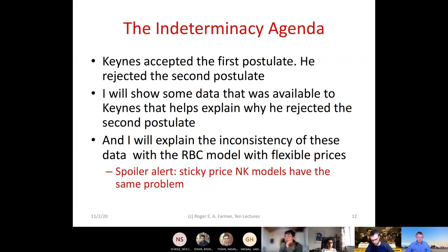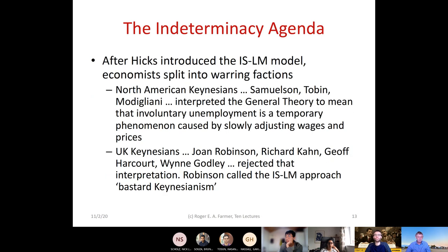I'm going to show you data that was available to Keynes that might help explain why he rejected the second postulate, and I'll explain why those data are inconsistent both with the real business cycle model and — as a spoiler — with the sticky price new Keynesian explanation as well. In many writings over the last decade or more I've said the new Keynesian model is neither new nor Keynesian, and I'd like to flesh that idea out.